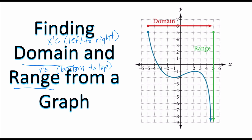Let's take a look at the example in front of you. Let's start first with the domain, which are the possible x-values. Notice there's a clear starting point to my graph — that is the point negative 5 comma 5. My graph starts at negative 5, then it's going to go down and start curving back up.